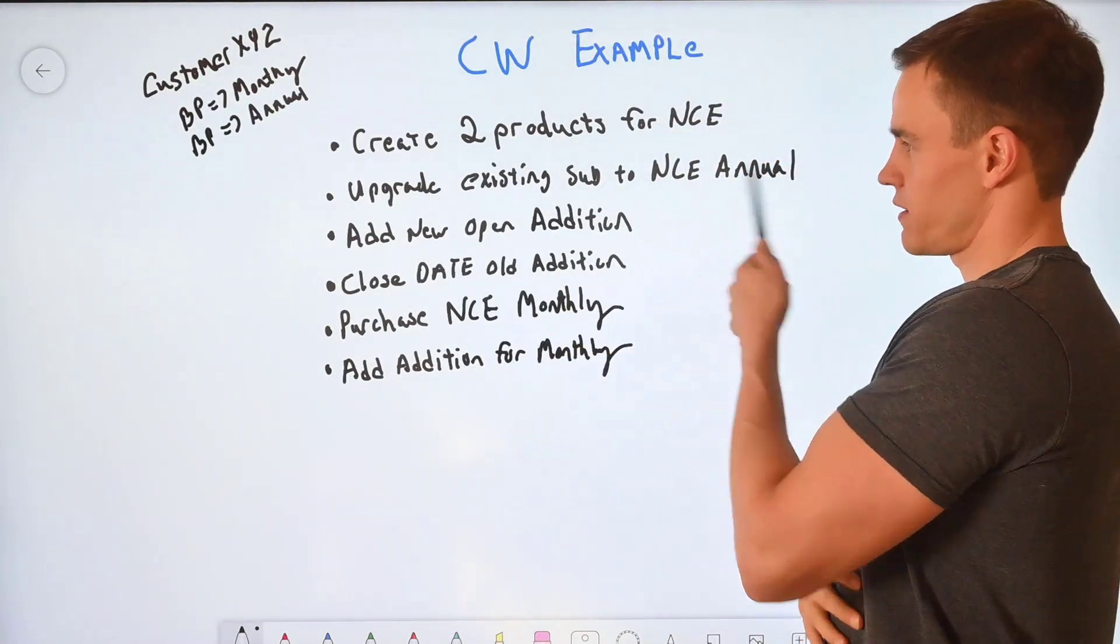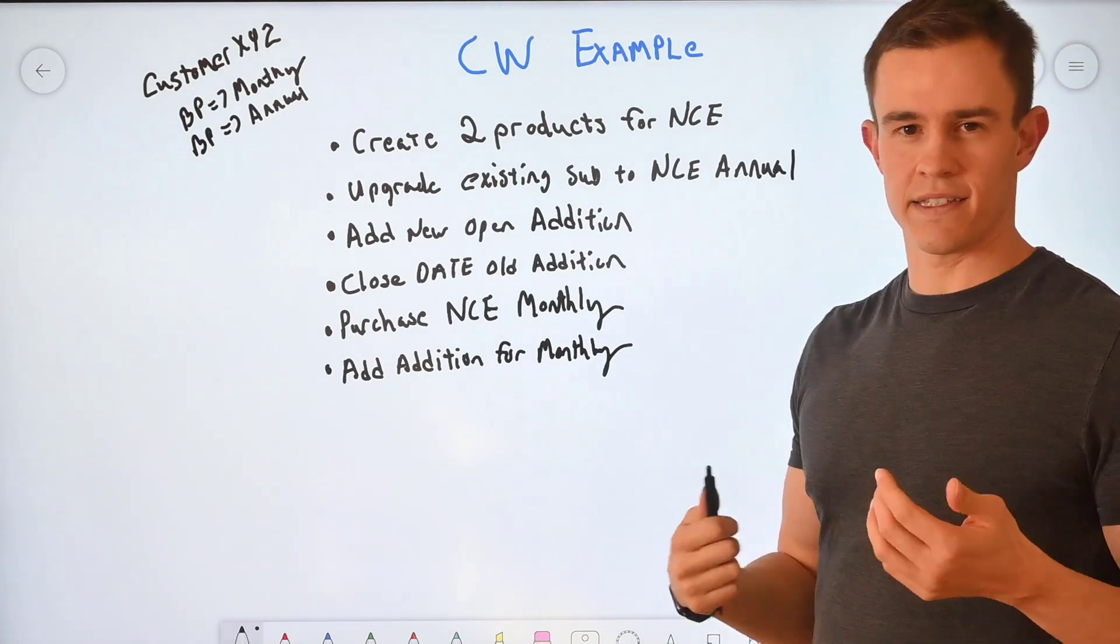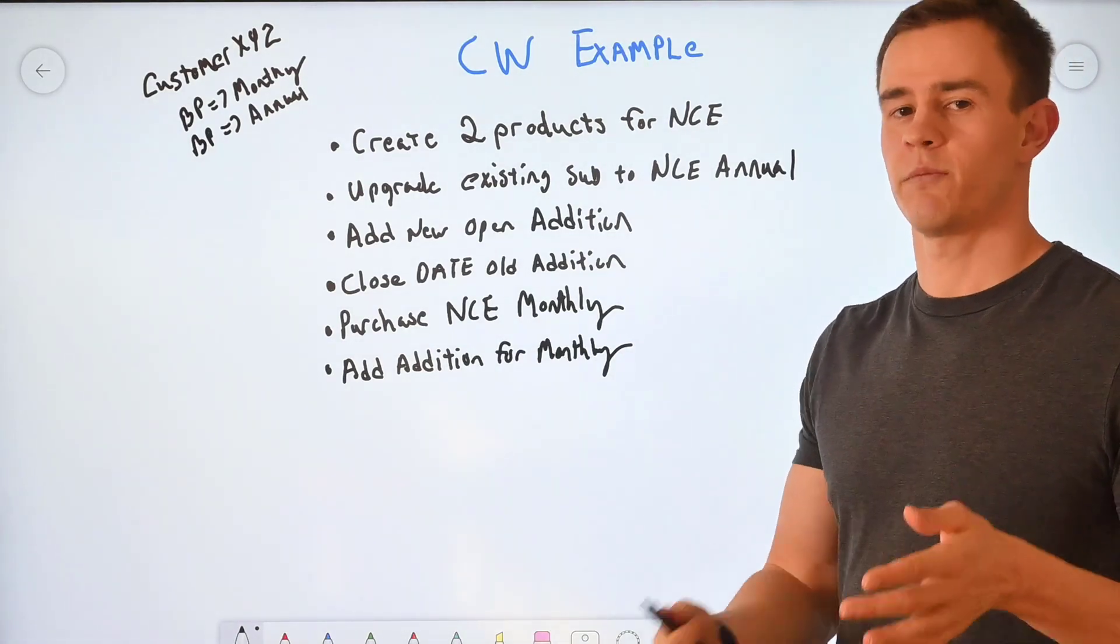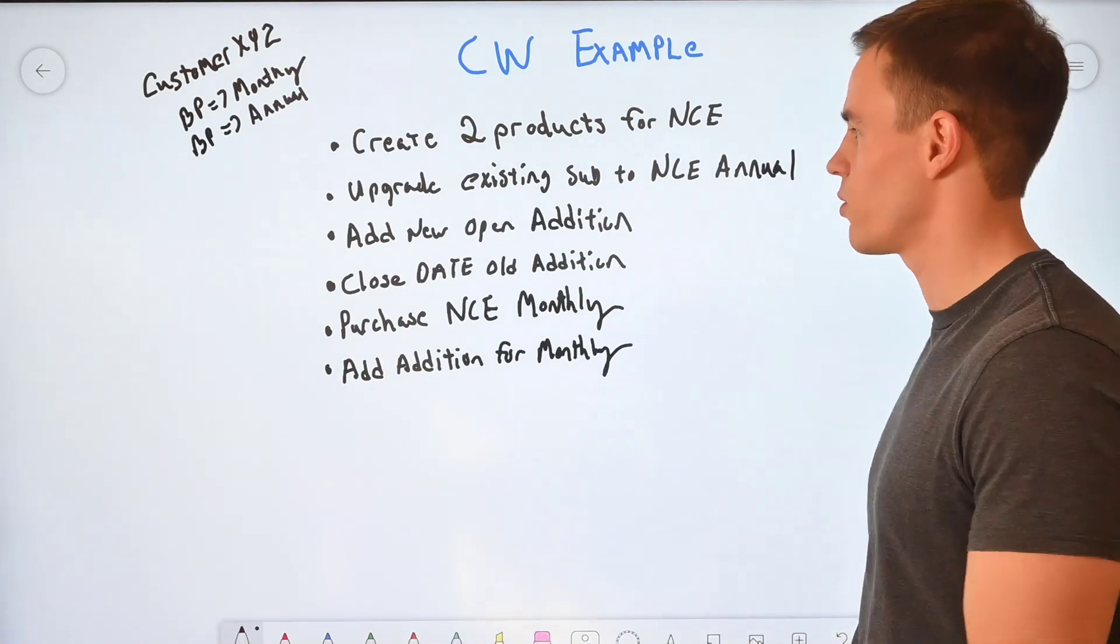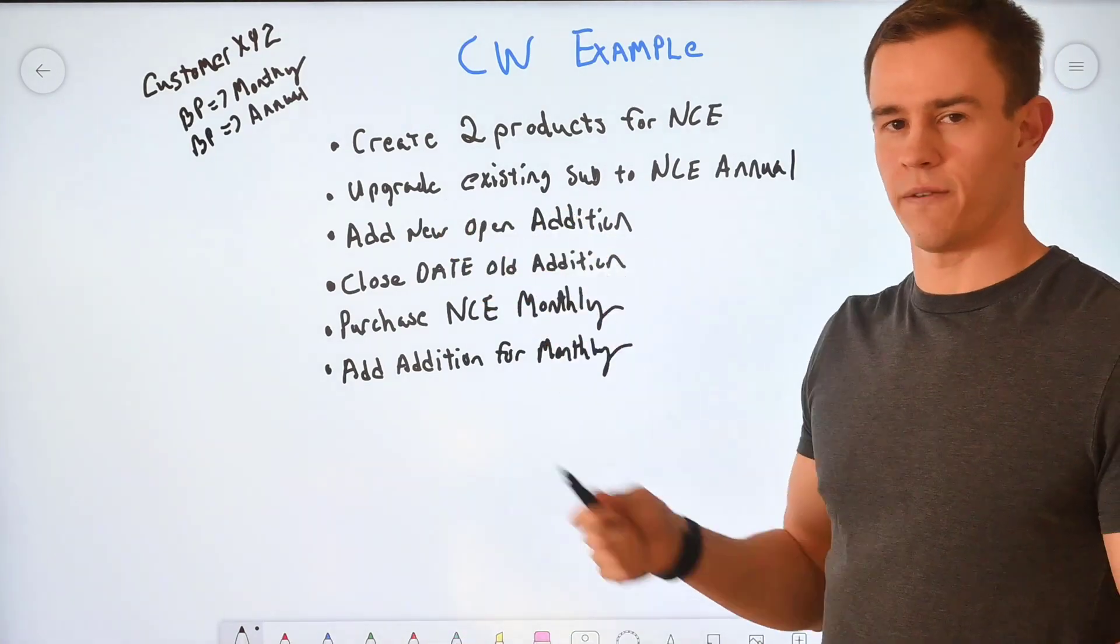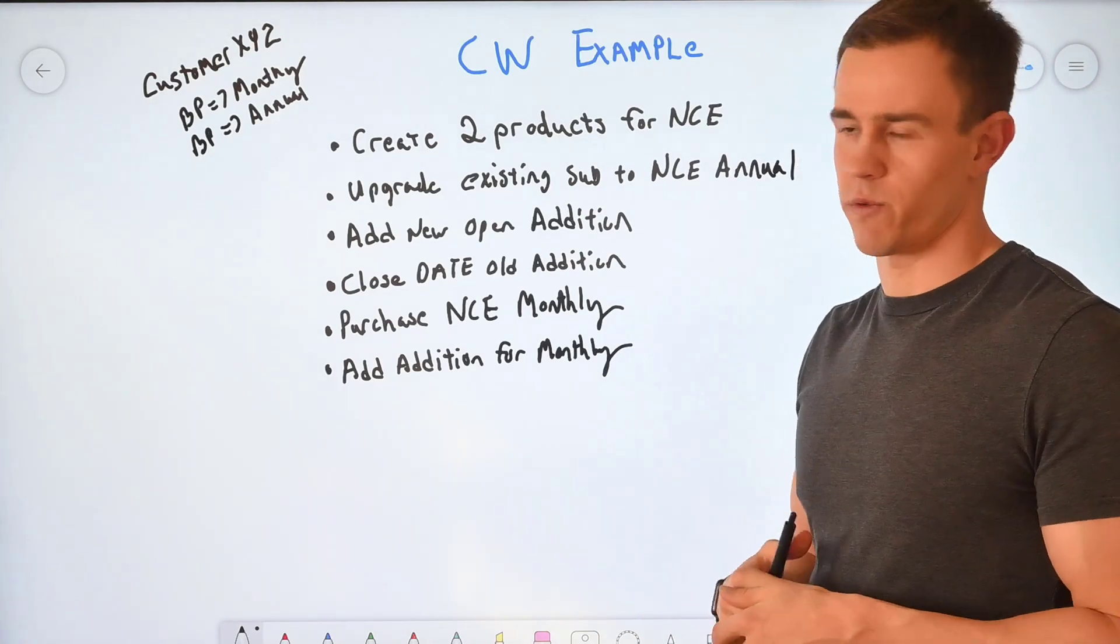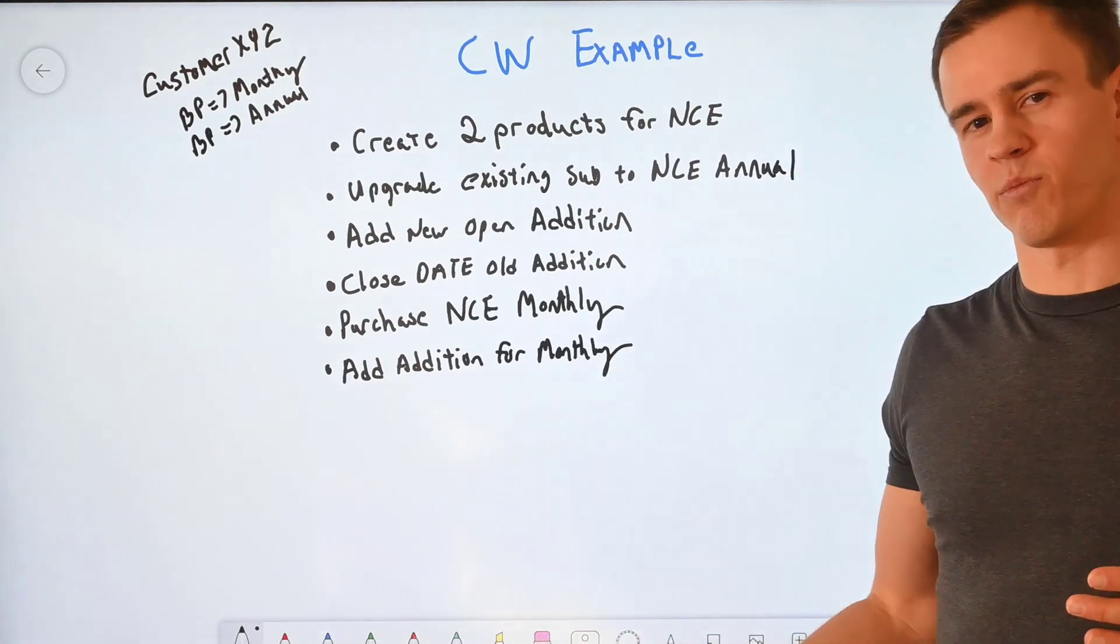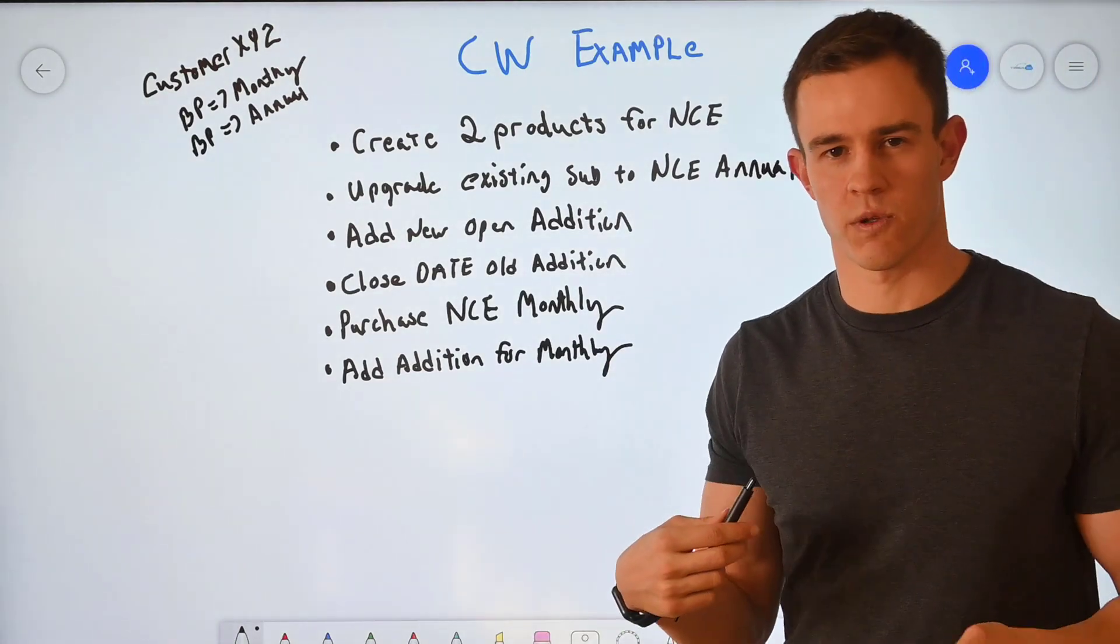You'll upgrade your existing subscription into the NCE annual as your base level product. You can adjust the seat count at that time before committing and upgrading into the annual. Again, try to do this on the first of the month just to align with your billing terms within ConnectWise and to avoid also any type of proration complexity. I think that's huge as well.